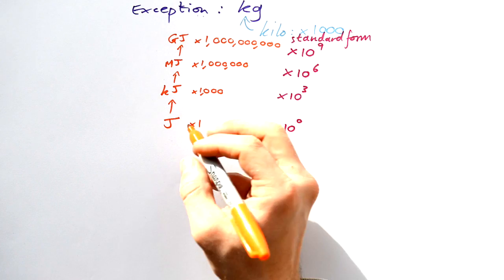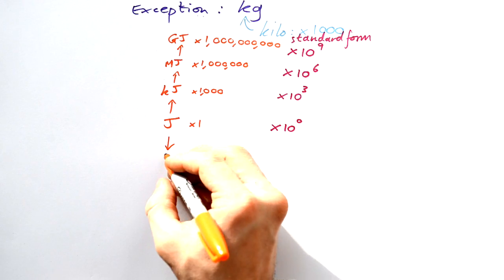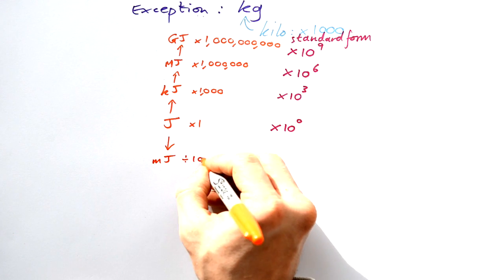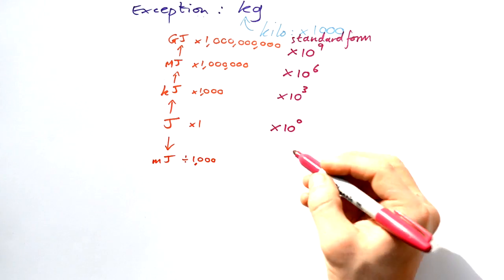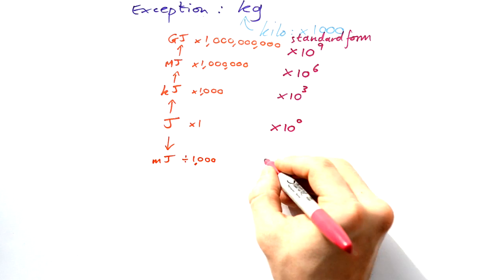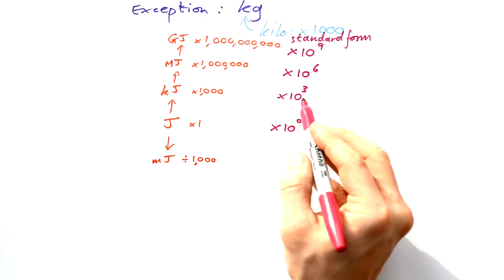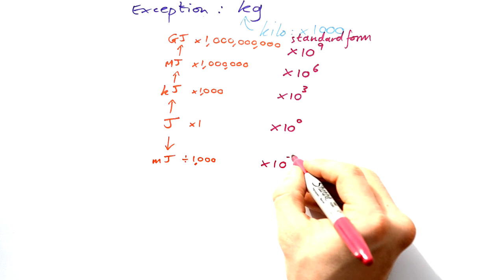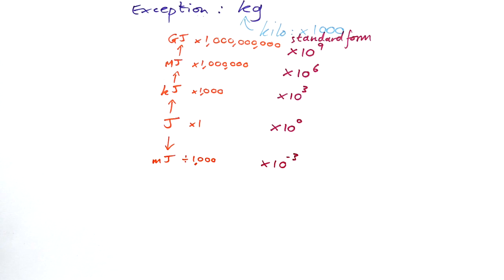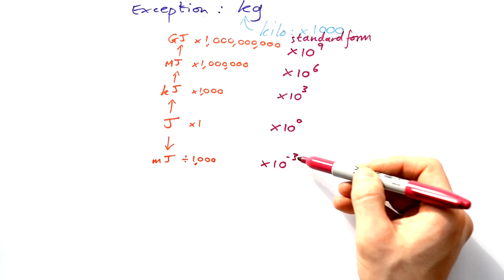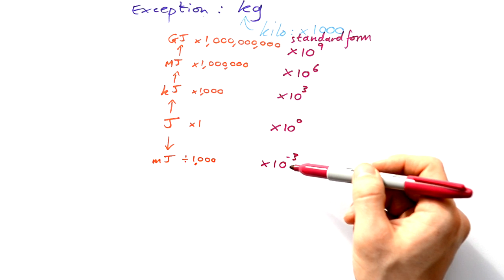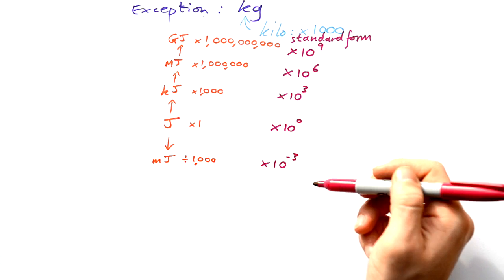What about if we go smaller than a joule? We go to a thousandth first, and that's a millijoule - that's divided by a thousand. So if we're dividing by a thousand, we could say we're dividing by 10 to the 3, but instead we say we're timesing by 10 to the minus 3. We're dividing by 10 three times. If you have something to the minus power, that means you're dividing by it.